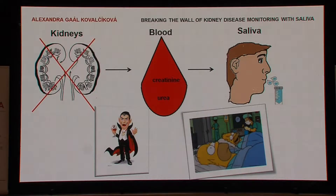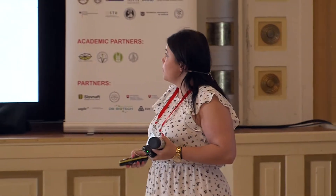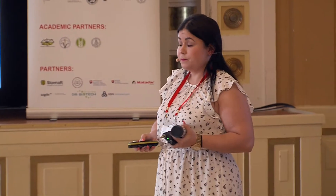An assessment of plasma creatinine and urea is a commonly used approach for the evaluation of kidney function. When kidney function is impaired, kidneys are not able to exclude waste products such as creatinine and urea, which leads to their accumulation in blood.